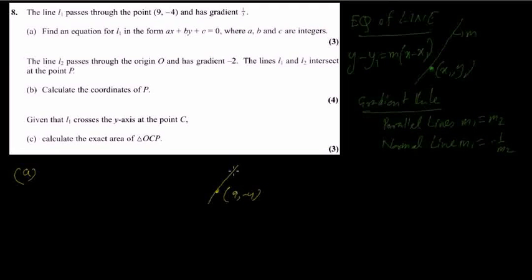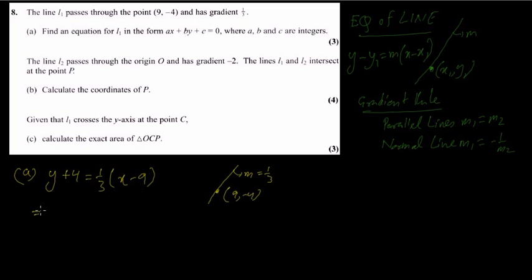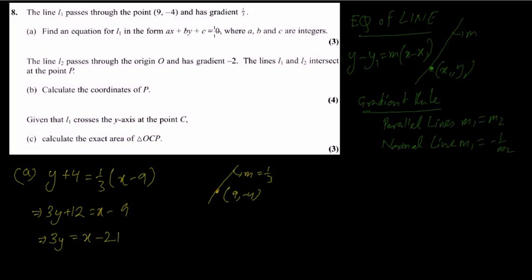In this particular sum, we have a line L1 that passes through the point (9, minus 4) and has a gradient of 1/3. So: y minus y1 gives y minus minus 4, which is y plus 4, equals 1/3 times x minus 9. Simplifying: 3y plus 12 equals x minus 9, so 3y equals x minus 21. They have mentioned to write the answer in the format where x, y, and a constant appear, so: x minus 3y minus 21 equals 0.